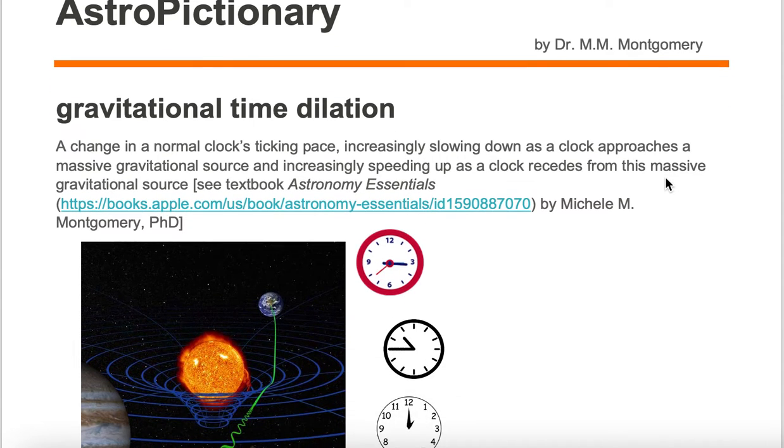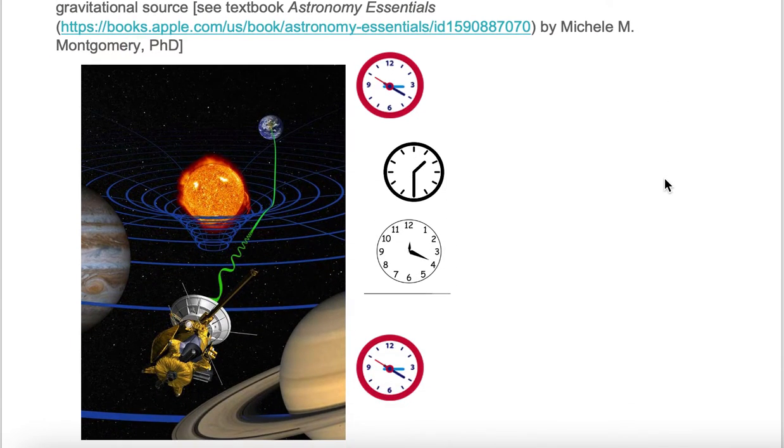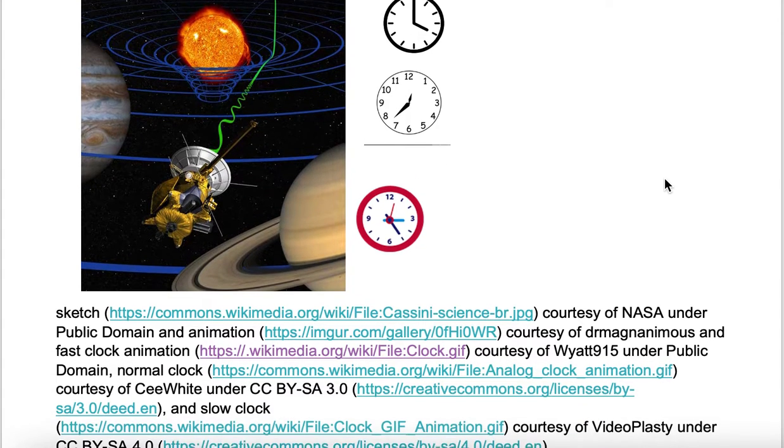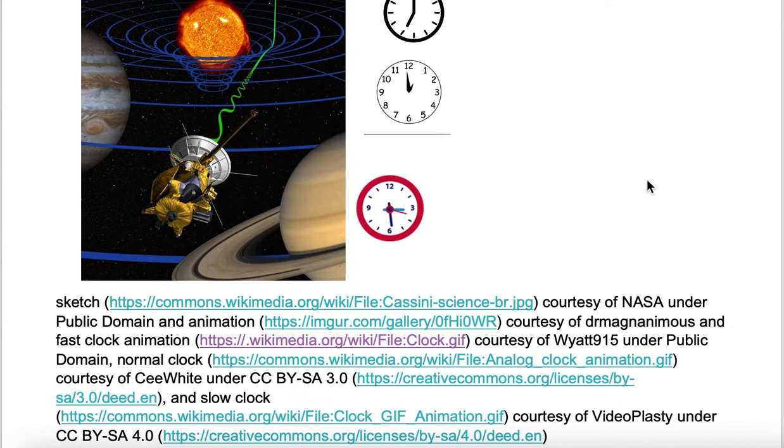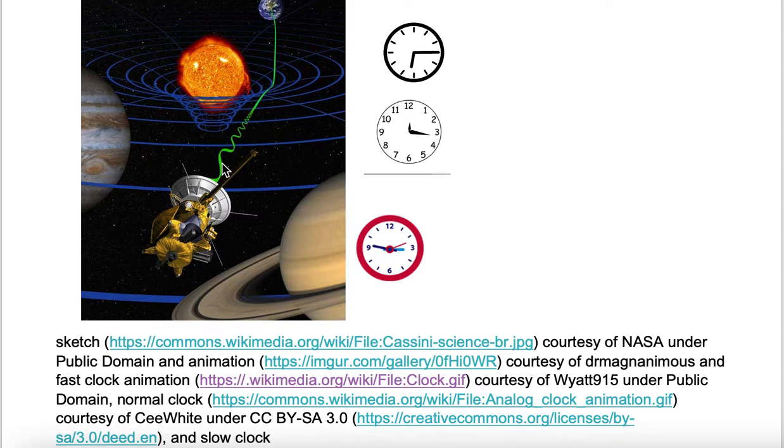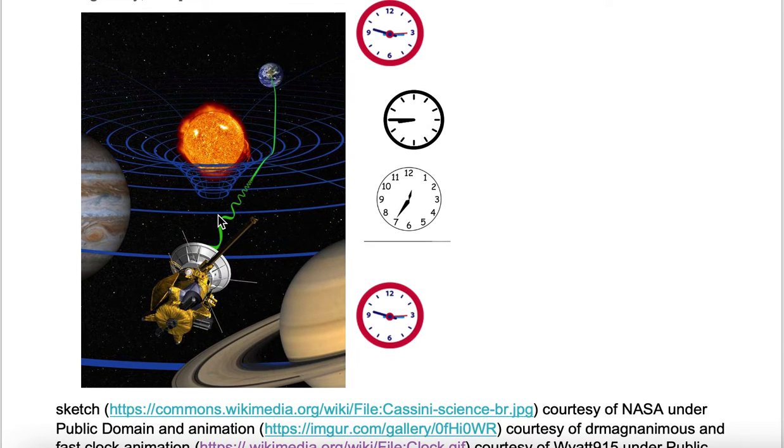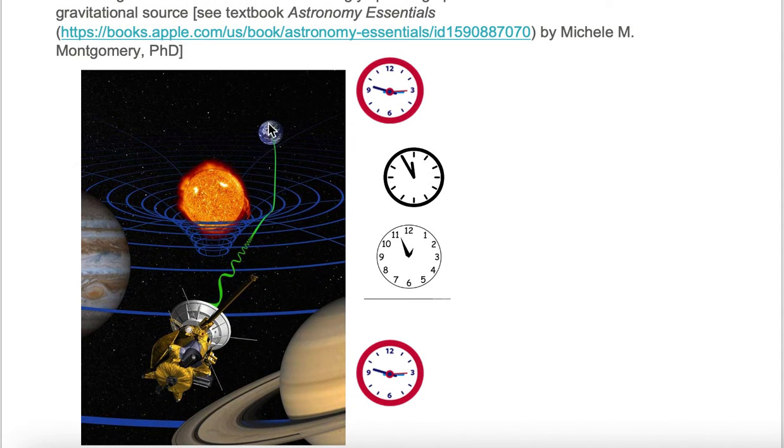Let's take a look at an example of gravitational time dilation. Here we're looking at a sketch of the Cassini space probe located near the planet Saturn. The space probe is located on the opposite side of the solar system compared to planet Earth.